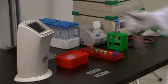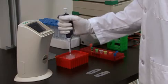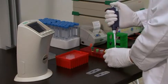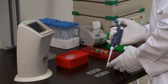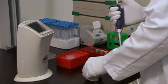The TC10 cell counter is very easy to use. Simply load the counting slide with 10 microliters of cell suspension and insert it into the instrument. The TC10 also gives you the flexibility of using Trypan Blue dye only when you want cell viability information.